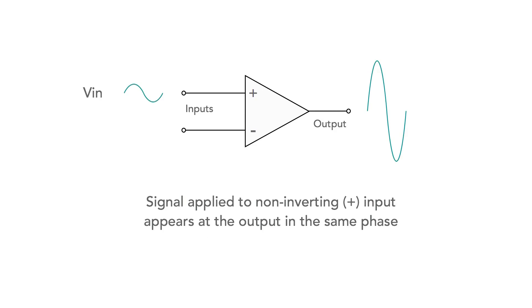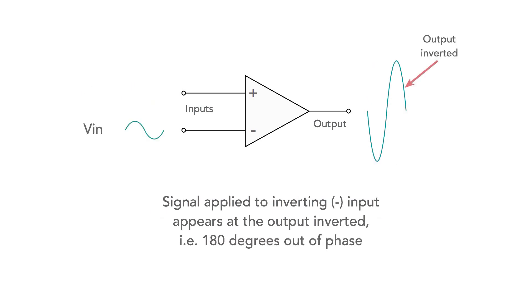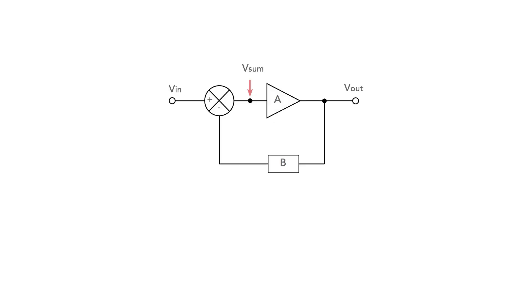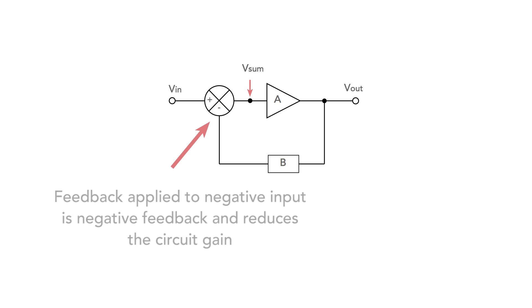It's worth noting that when a signal is applied to the positive input, it appears at the output in the same phase. Any signal applied to the negative input is inverted as it passes to the output. Thus feedback applied to the negative input is negative feedback and acts to reduce the level of amplification of the overall circuit.